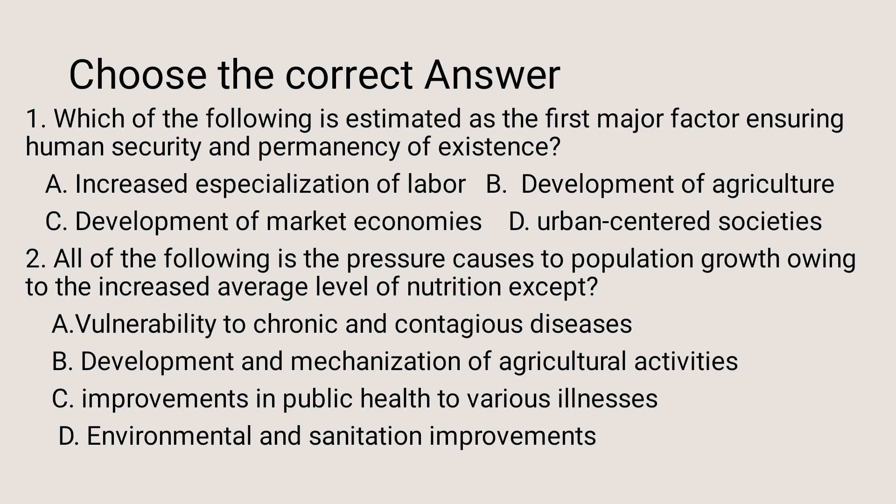Which of the following is estimated as the first major factor ensuring human security and permanency of existence? A. Increased specialization of labor. B. Development of agriculture. C. Development of market economies. D. Urban-centered societies.